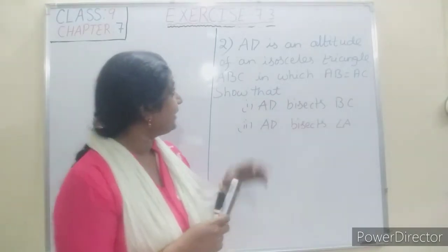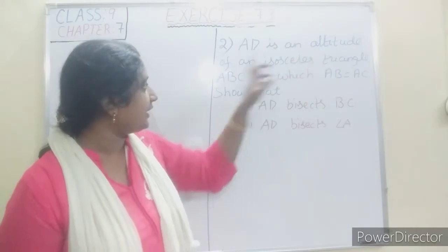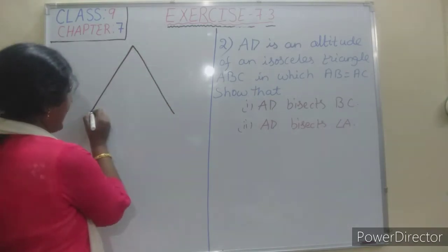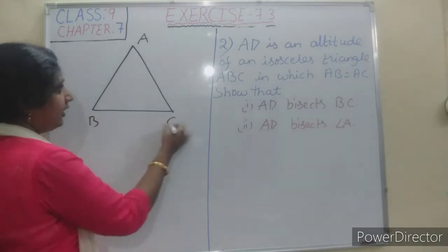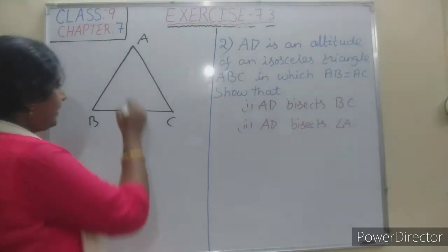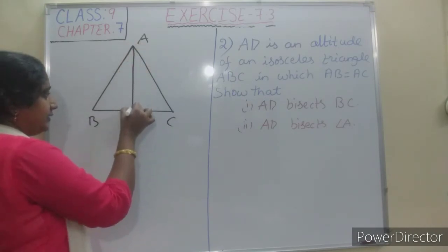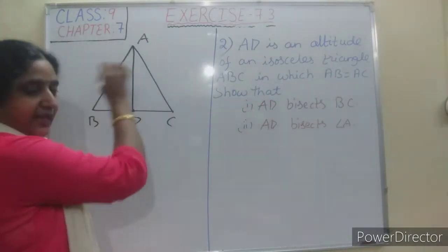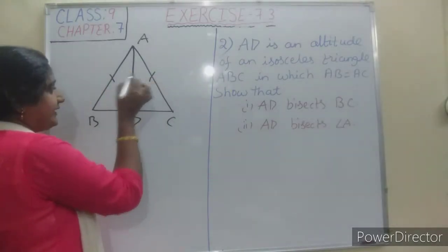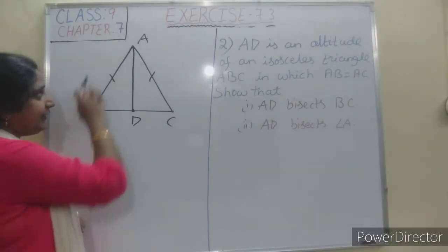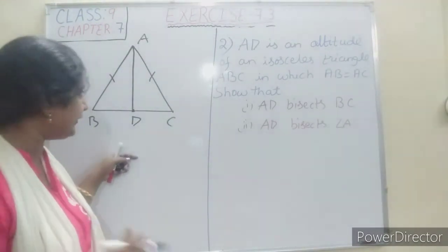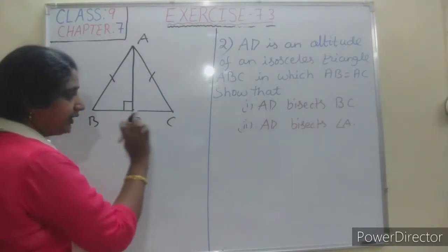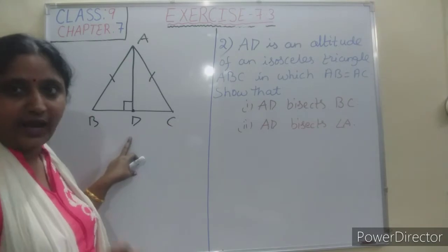Now we will see question number 2. AD is an altitude of an isosceles triangle ABC, where AB equals AC. Altitude means AD is perpendicular to the base BC, so AD makes a 90-degree angle with BC.